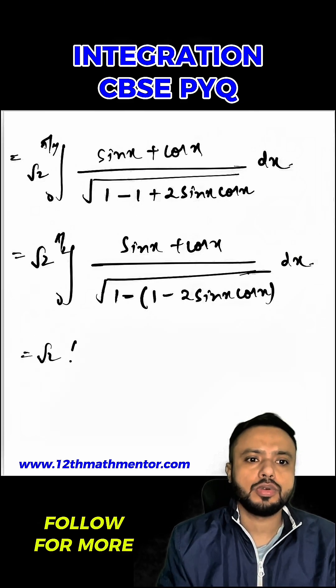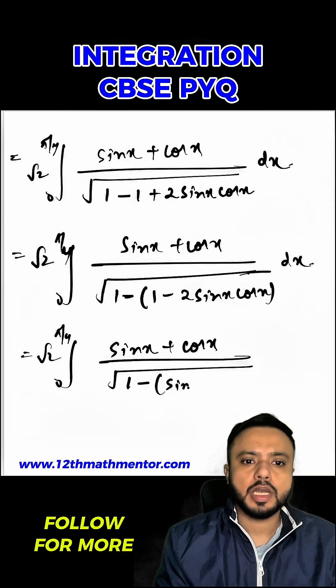So basically I have taken these terms here, so it will be root 2 from 0 to pi by 4 sine x plus cos x upon root of 1 minus sine x minus cos x ka whole square dx.